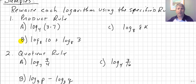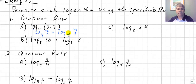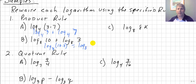Let's wrap up with some quick samples. Using our product rule: log base 4 of 3 times 7 equals log base 4 of 3 plus log base 4 of 7. And going in the opposite direction: log base 8 of 10 plus log base 8 of 3 equals log base 8 of 10 times 3, or log base 8 of 30.